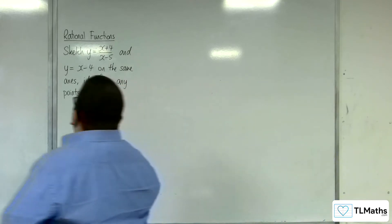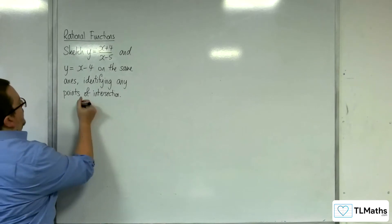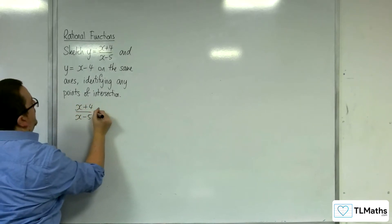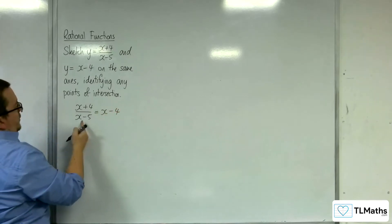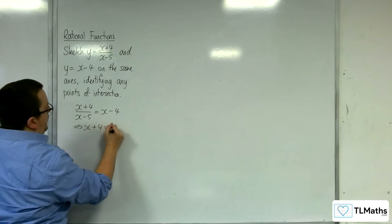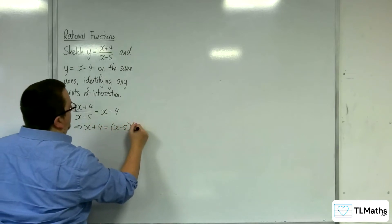So the first thing I would do is work out where they intersect. I'm going to put x plus 4 over x minus 5 equal to x take away 4. So multiply that by the x minus 5. x plus 4 equals x minus 5, x minus 4.